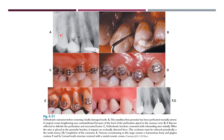Here is a case of orthodontic extrusion before restoring a badly damaged tooth. The maxillary first premolar had been perforated mesially, and surgical crown lengthening was indicated because the level of perforation was apical to the osseous crest. A flap was raised and orthodontic brackets were cemented with a rebounding wire initially. Extrusion was completed, osseous recontouring was done, and then compulsory endodontic post and core treatment was completed and a crown was made.